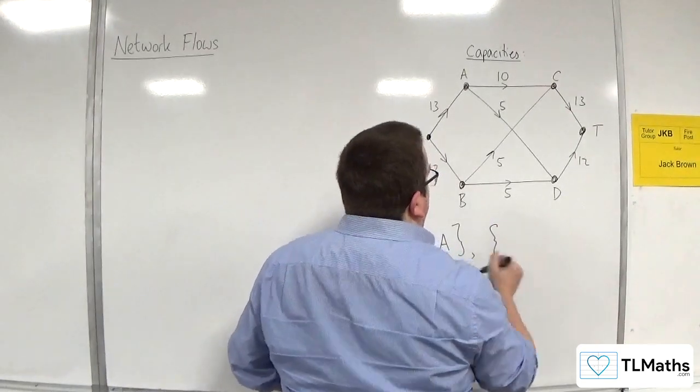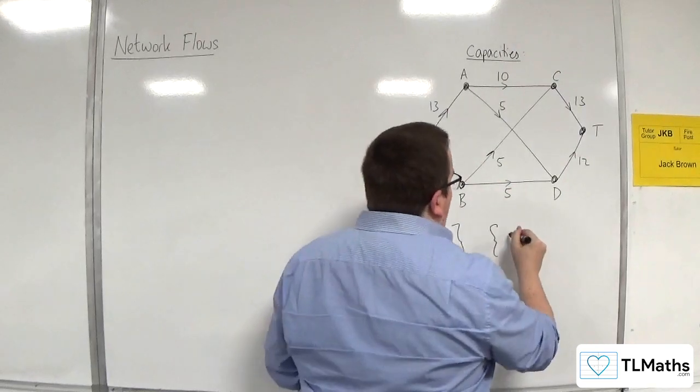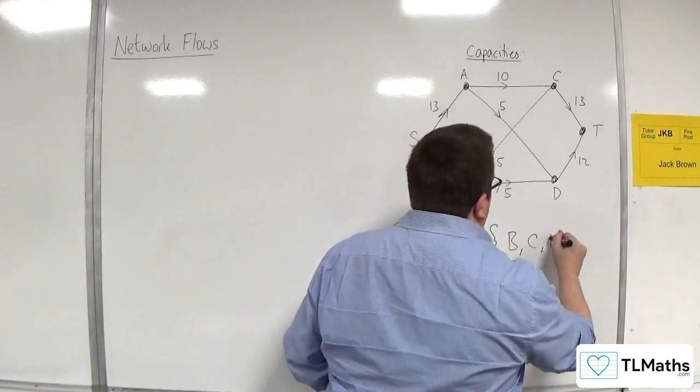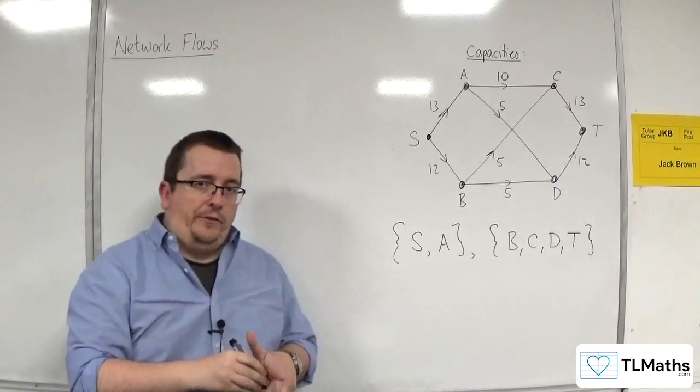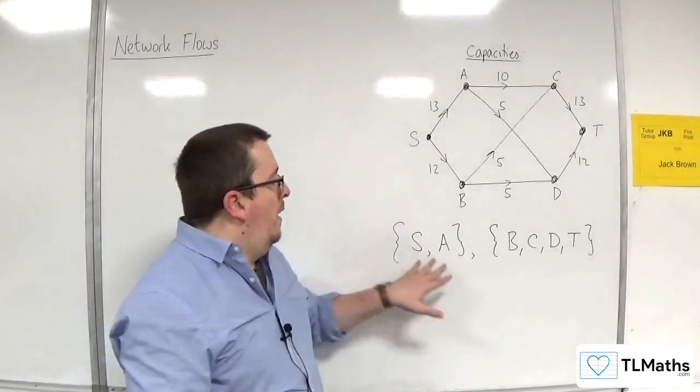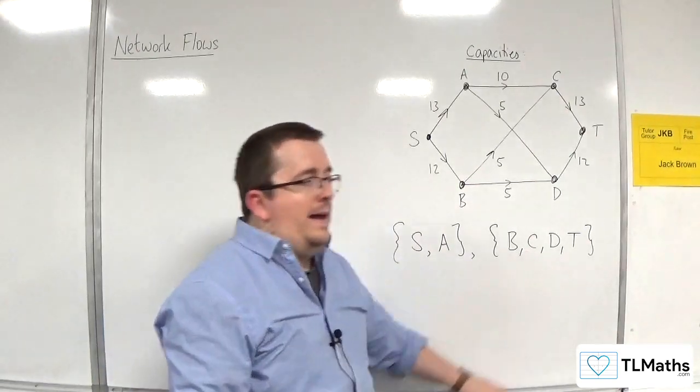And in the other set, we've then got B, C, D and T. So we've got two distinct sets, one that has the source, one that has the sink.